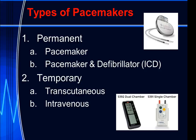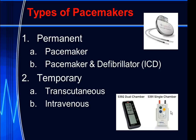When it comes to temporary pacemakers, there are two kinds: transcutaneous — meaning it goes through the skin and tissues to the heart — and intravenous, which goes into the heart by wire and is managed by a portable pulse generator. The dual and single chamber pulse generators shown below are used only temporarily. They are better for the patient than transcutaneous because they don't cause pain from shock, but they remain temporary until a permanent pacemaker can be implanted.